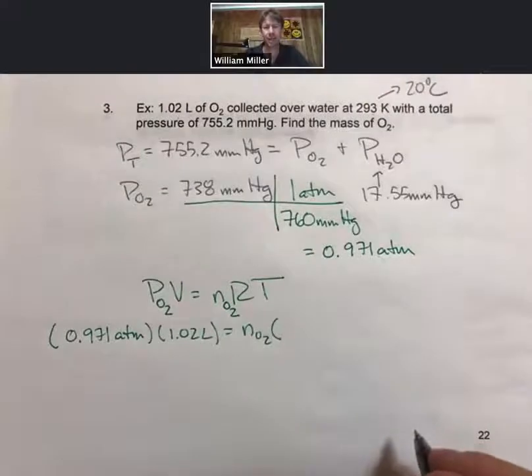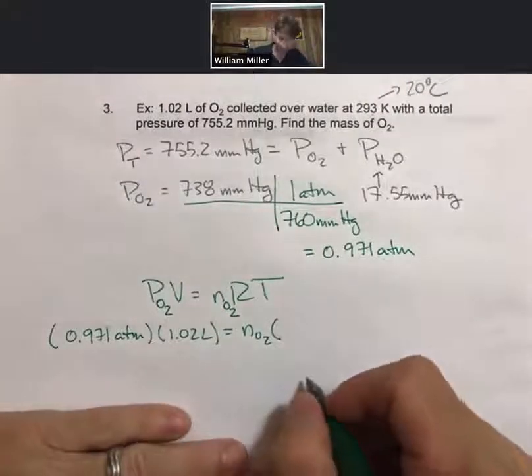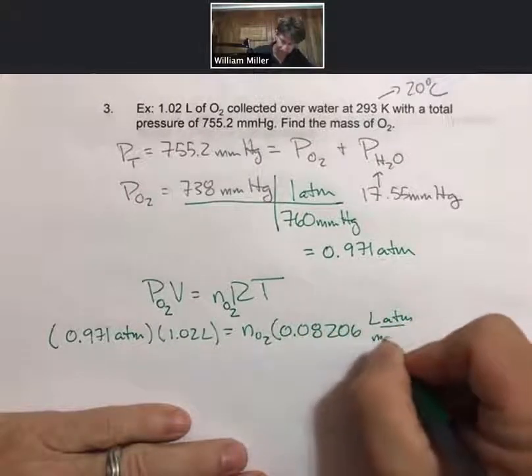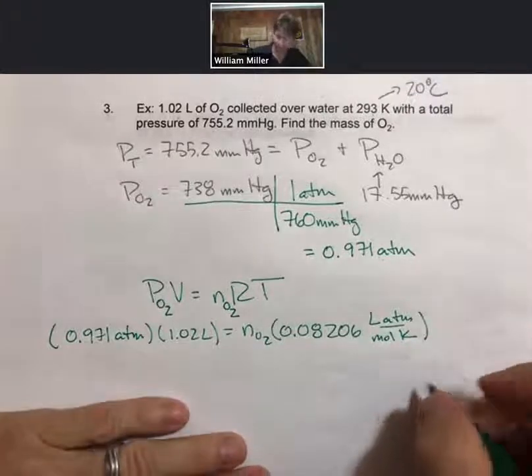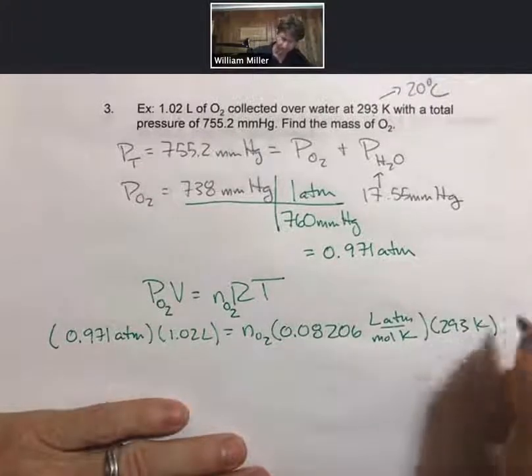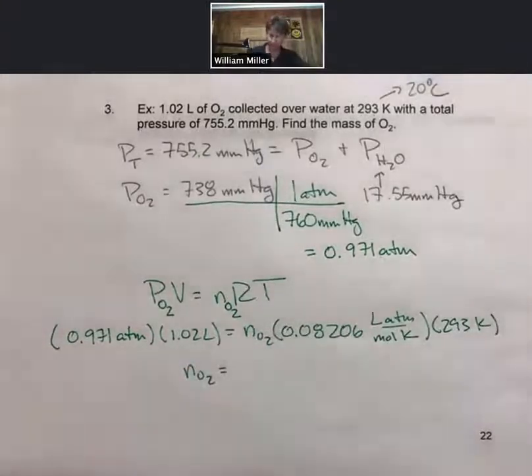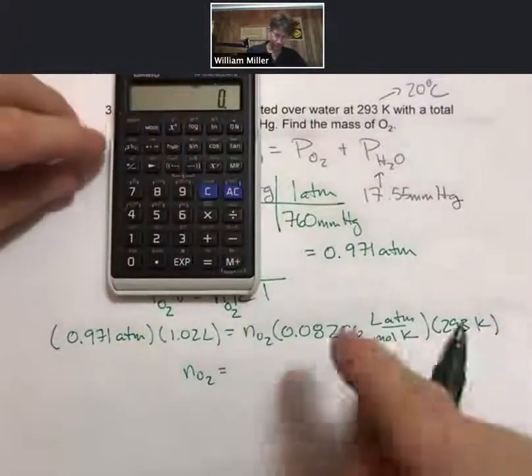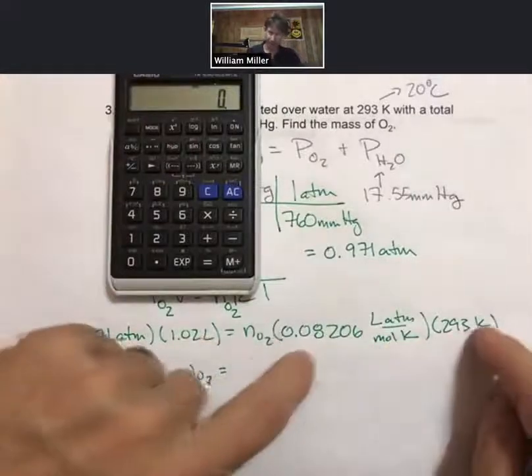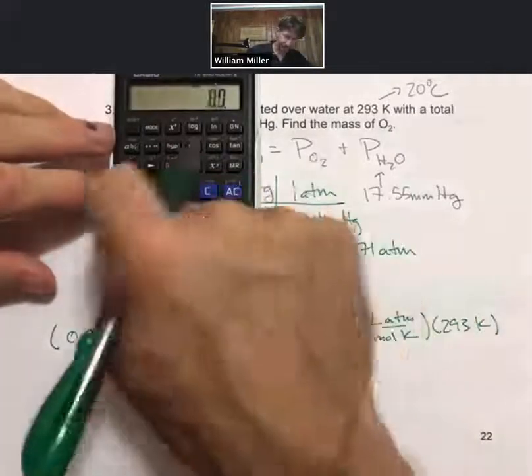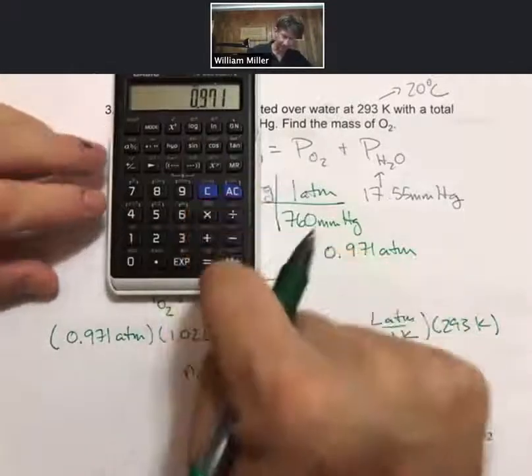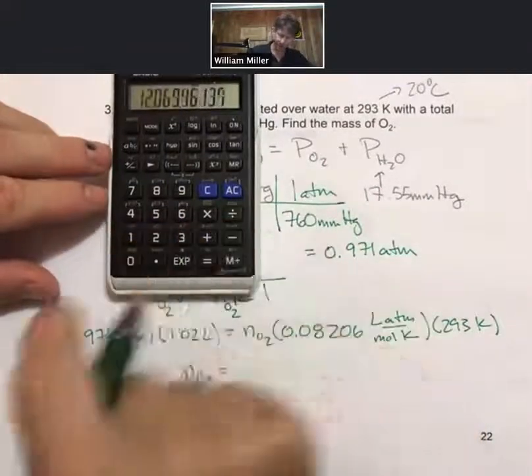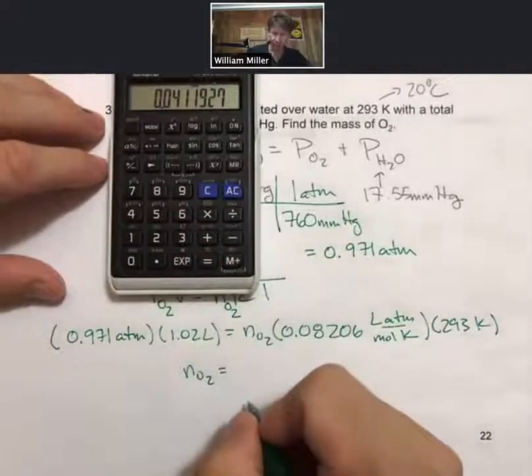Go ahead and plug everything in. R is the ideal gas constant, 0.08206, and temperature 293 Kelvin. Rearranging to solve for my moles of oxygen, it's going to be these two divided by these two: 1.02 divided by 0.08206 divided by 293 equals 0.0412 moles of oxygen.